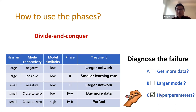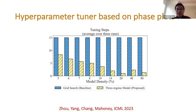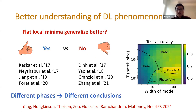You can view this as a divide-and-conquer way to diagnose machine learning failures. Depending on which phase your problem belongs to, you can find the main issue — in some phases you want a smaller learning rate, in others you want to make the network larger. This work was published at this year's ICML, where we showed that using the phase plots you can determine a better way of tuning hyperparameters, giving much faster computation compared to random search.